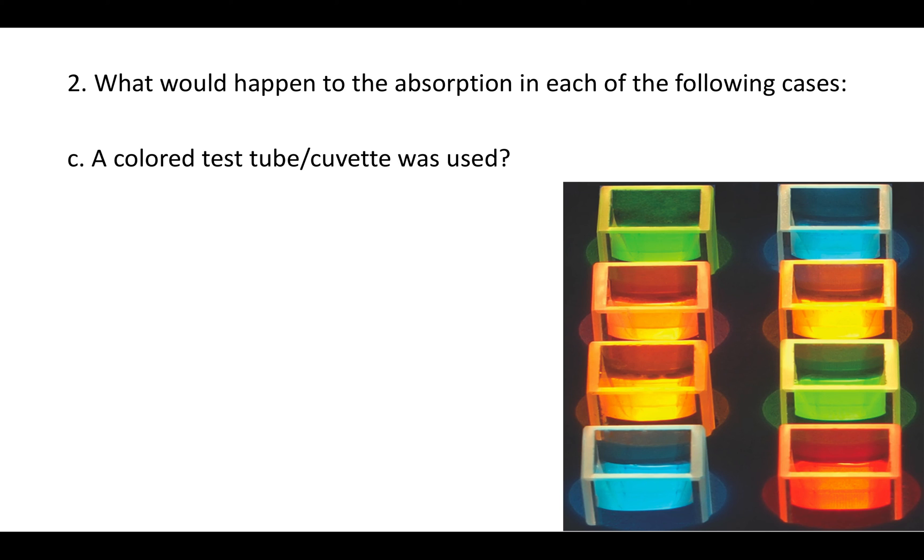Case C says a colored test tube or cuvette was used. Now if you use a colored test tube, the test tube itself or the cuvette itself is going to absorb some of the light and so that absorption would be added to whatever absorption the solute or the compound you're measuring would have and so again the absorption would be bigger.